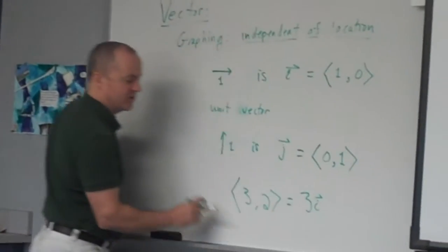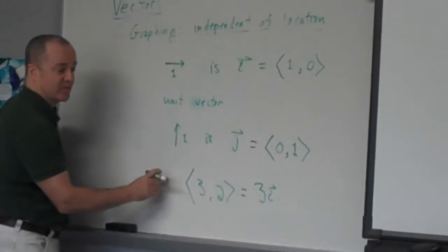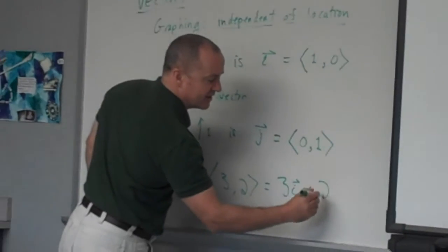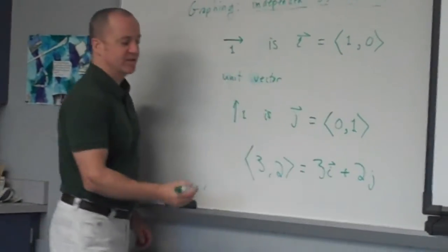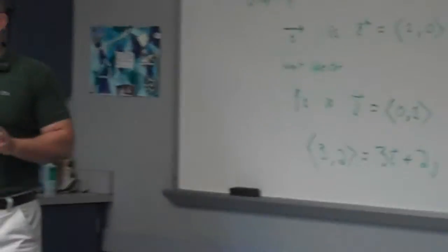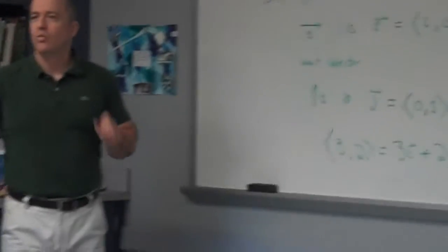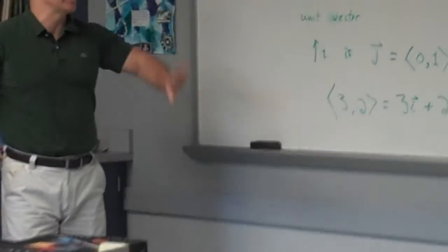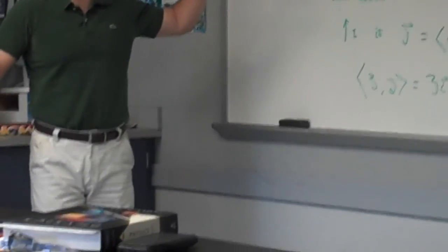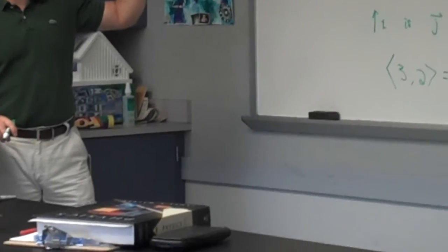Three I vectors - you go three single unit vectors to the right, plus two J vectors, two units up. And it doesn't matter where you start. With vectors, we don't care where you start. We just care from where you start, where did you wind up. So you can take these vectors and slide them around anywhere in the Cartesian coordinate plane, and they mean the same thing.